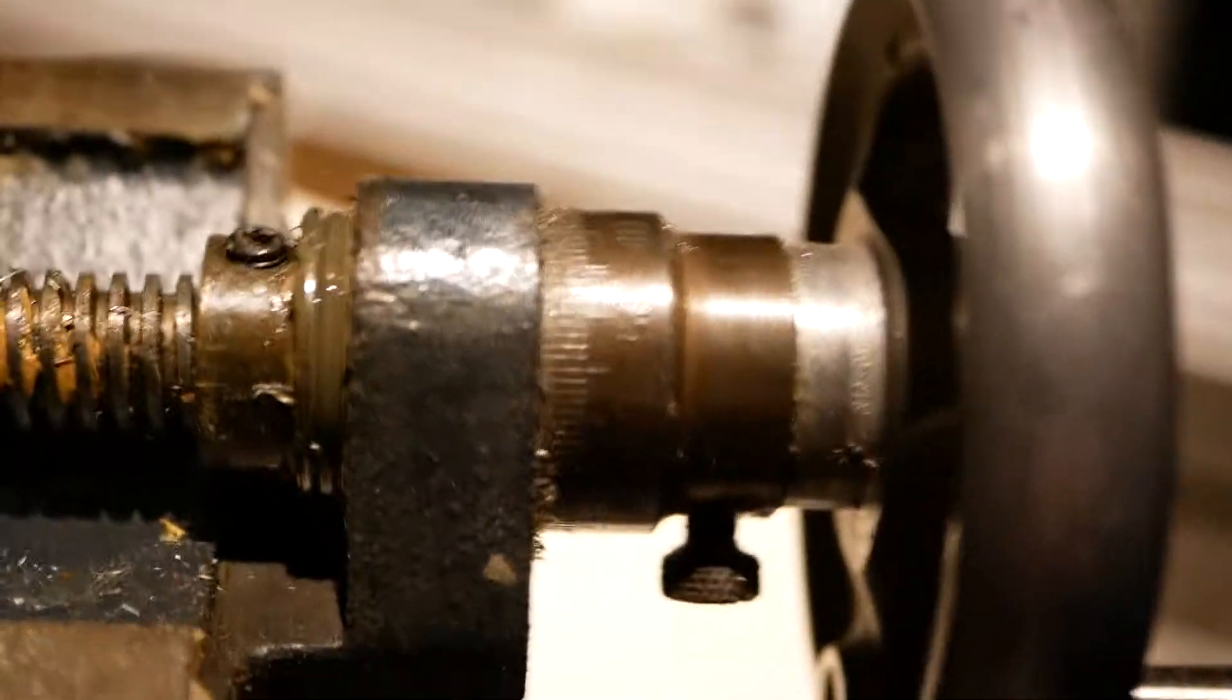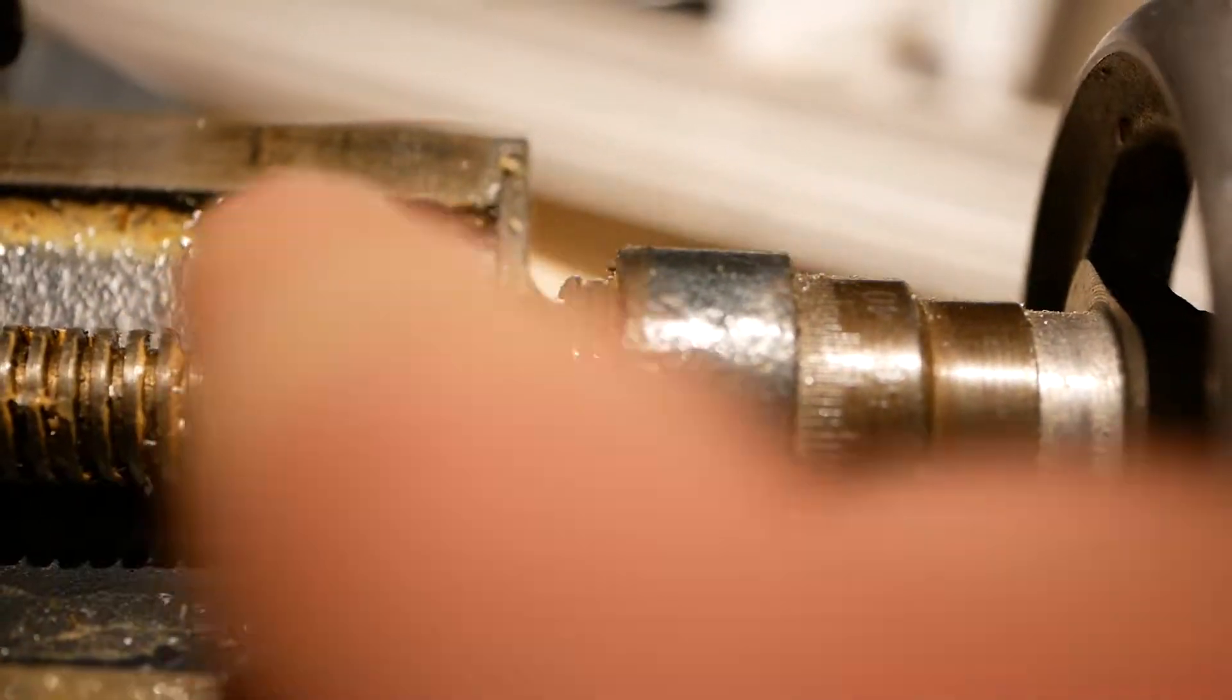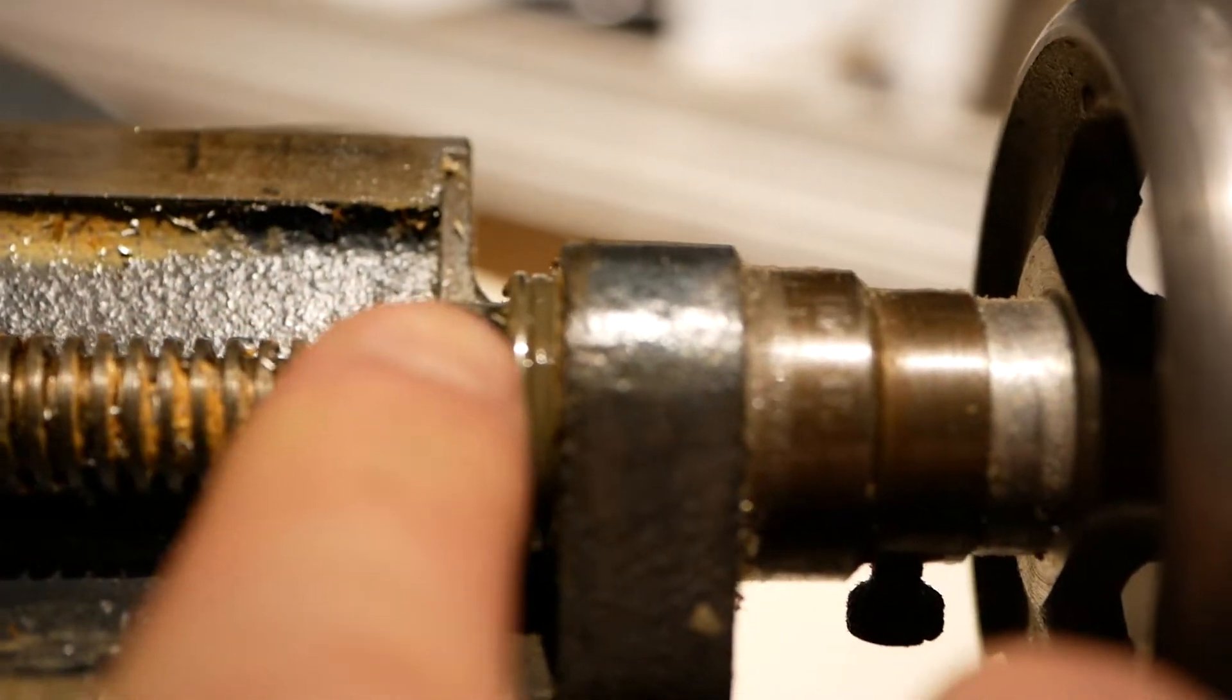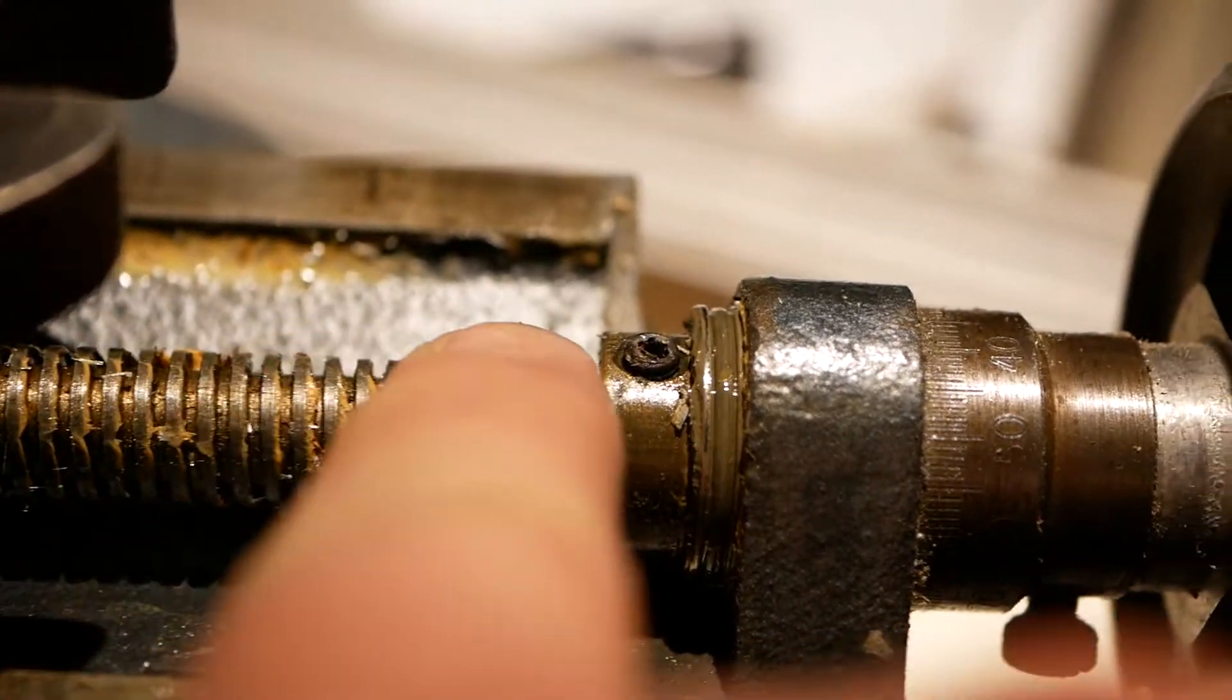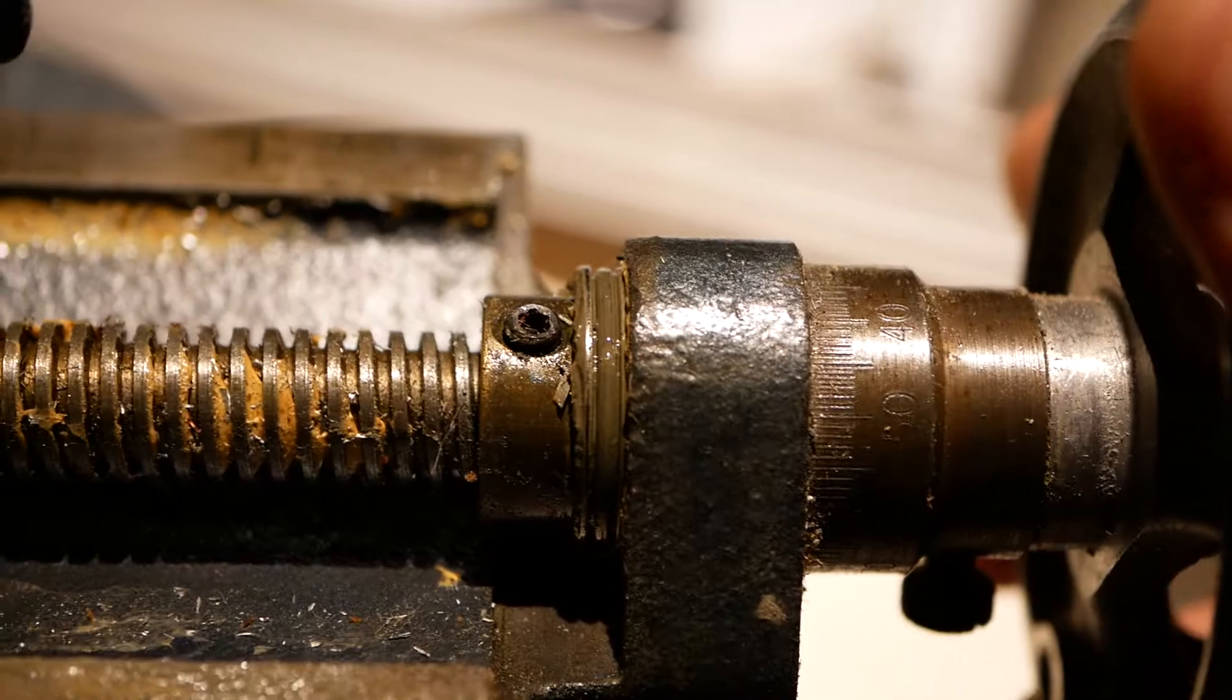What you're looking at here is the lead screw, here's your handle, and this right here is a brass nut. It's threaded with lead screw threads and as you can see it's got a set screw in it.